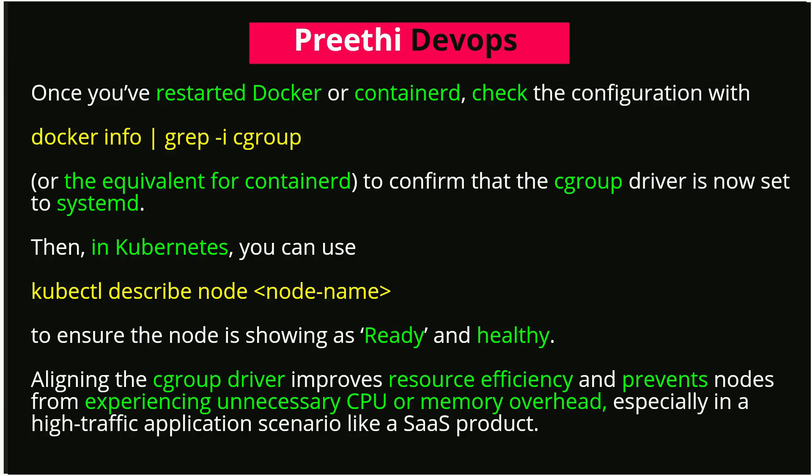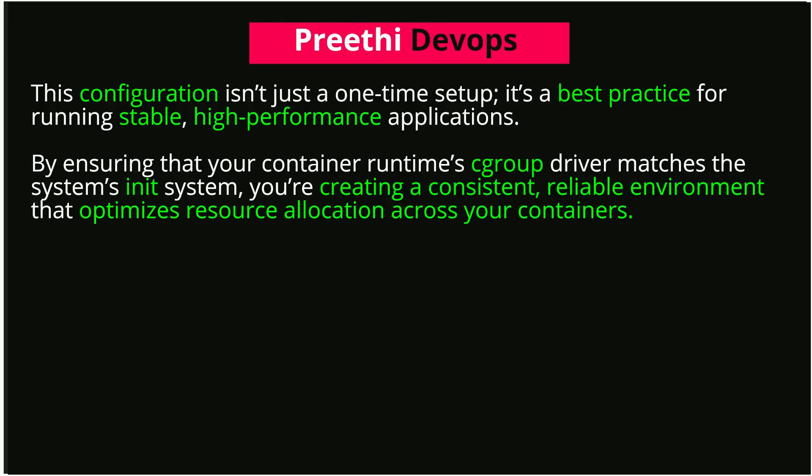Then, in Kubernetes, you can use kubectl describe node <node-name> to ensure the node is showing as ready and healthy. Aligning the cgroup driver improves resource efficiency and prevents nodes from experiencing unnecessary CPU or memory overhead, especially in a high-traffic application scenario like a SaaS product. This configuration isn't just a one-time setup — it's a best practice for running stable, high-performance applications, creating a consistent, reliable environment that optimizes resource allocation across your containers.